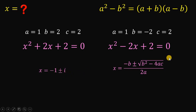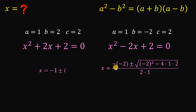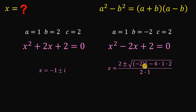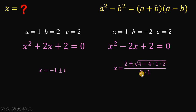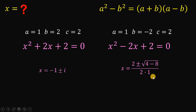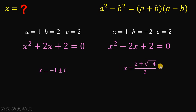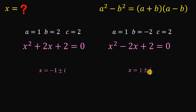For the second case, substituting all values: negative of negative 2 gives 2, negative 2 squared gives 4, and 4 times 1 times 2 gives 8, with 2 times 1 on the denominator giving 2. So again 4 minus 8 gives negative 4, and the square root of negative 4 gives 2i. Simplifying, 2 plus or minus 2i over 2 gives us 1 plus or minus i.